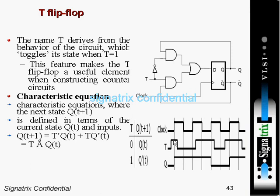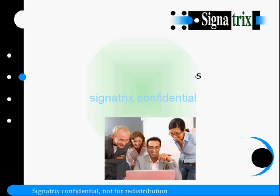Based on the T input, the output will change. At this passage the T value is one, and Q is zero before that — so when T is one it toggles to one. Coming to the next passage, T is zero so it maintains its previous state of one throughout.